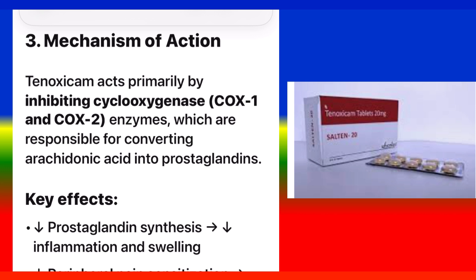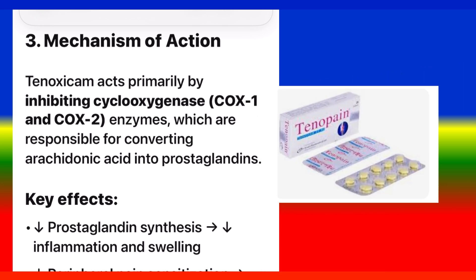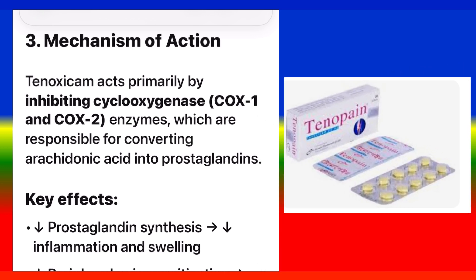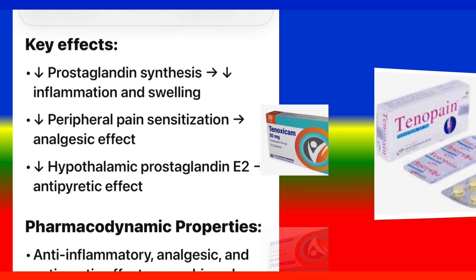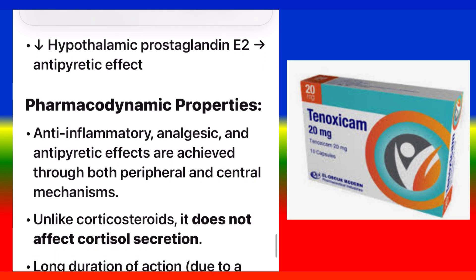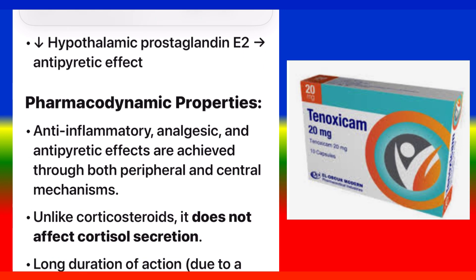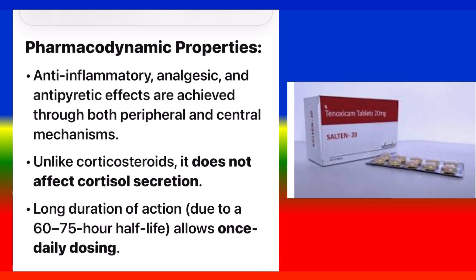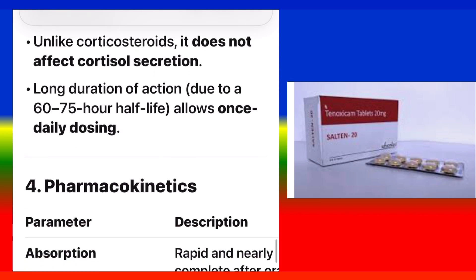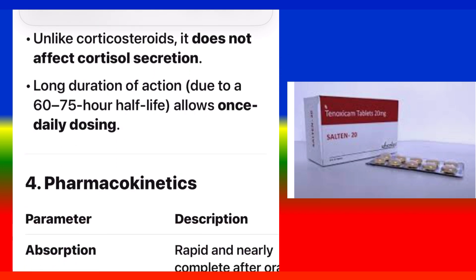Mechanism of Action: Tenoxicam acts primarily by inhibiting cyclooxygenase COX-1 and COX-2 enzymes, which are responsible for converting arachidonic acid into prostaglandins. Key effects include reduced prostaglandin synthesis, reduced inflammation and swelling, reduced peripheral pain sensitization (analgesic effect), and reduced hypothalamic prostaglandin E2 (antipyretic effect). Anti-inflammatory, analgesic, and antipyretic effects are achieved through both peripheral and central mechanisms. Unlike corticosteroids, it does not affect cortisol secretion.